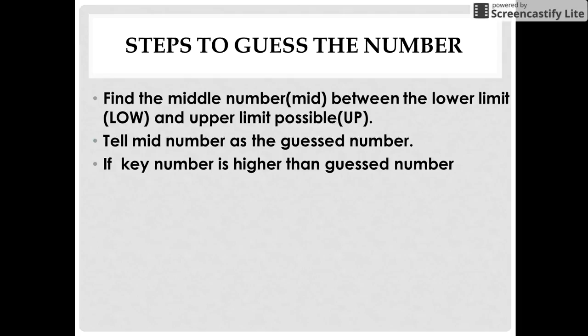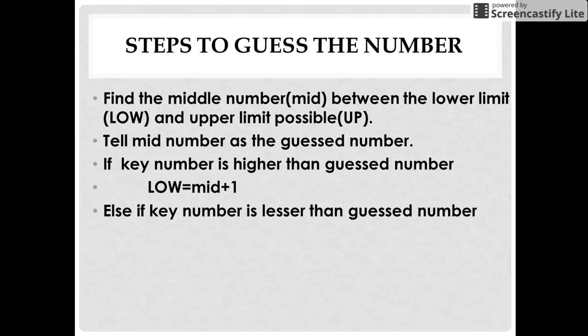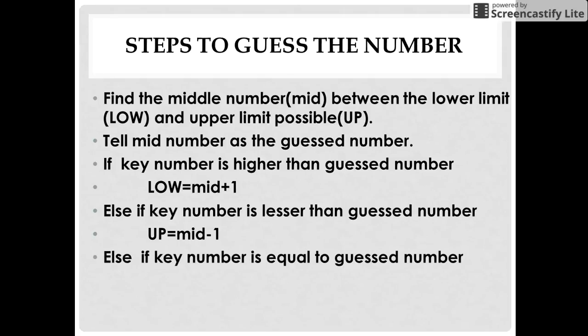If the key number is higher than the guess number, then we change our lower limit to middle number plus 1. If the key number is lesser than the guess number, then our upper limit is changed to middle number minus 1. If you guessed it on the first try, then your job is done.